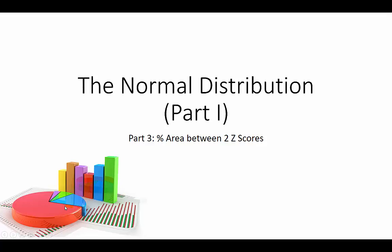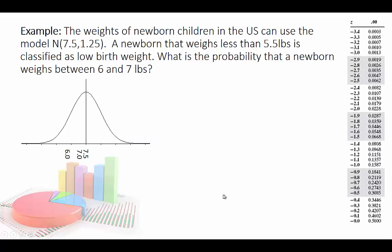We've sort of talked about area between two z-scores already, in the sense of when we go all the way to the left like negative 100, or all the way to the right to positive 100, or even when we're talking about between negative 1 and 1, negative 2 and 2, and negative 3 and 3. But a lot of times we will be doing z-scores and percents between two different z-scores.